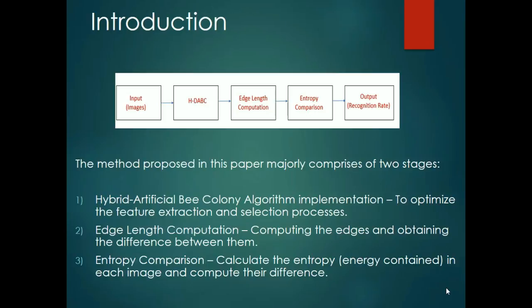The HDABC algorithm uses optimized feature extraction and selection mechanisms by the participant onlooker, scouts, and employed bees. This algorithm is suitable for distinguishing between twins due to its high accuracy and its ability to exploit the infinitesimally small differences that exist between identical twins.